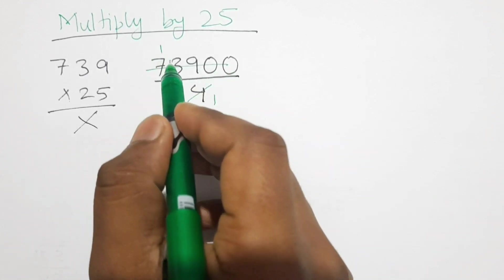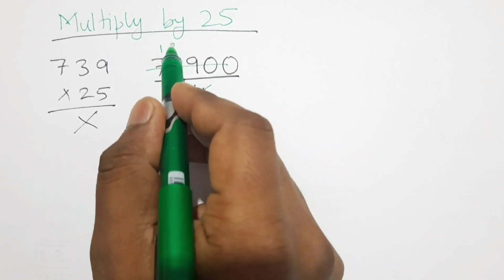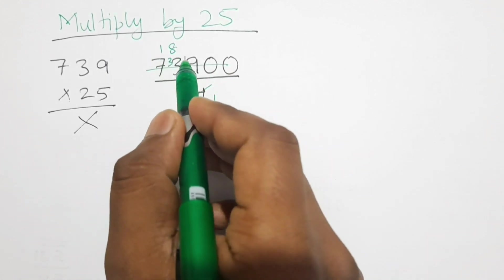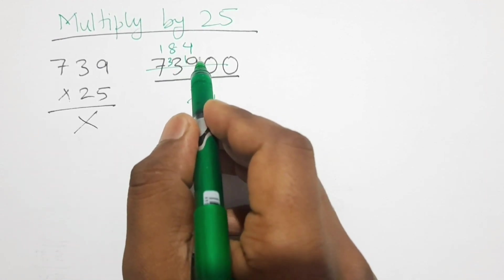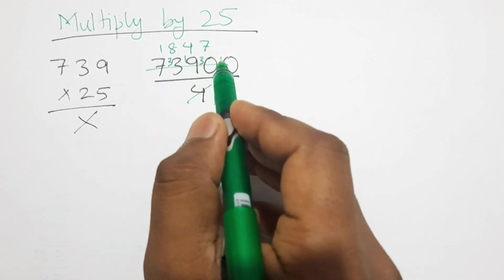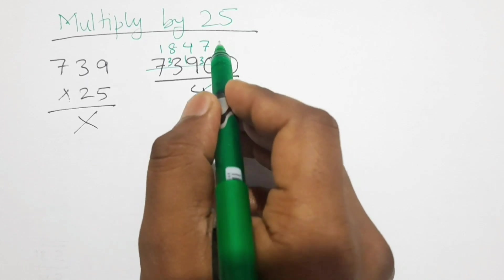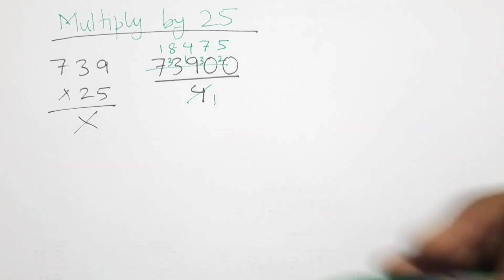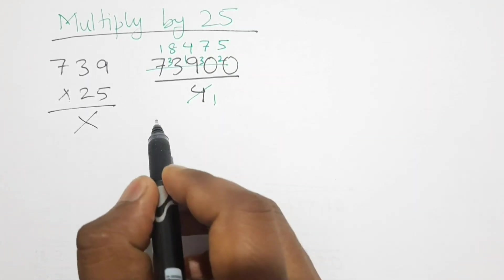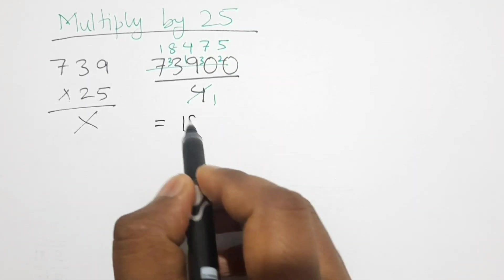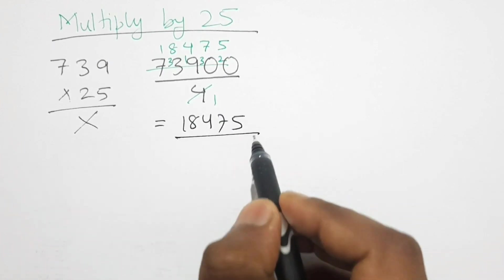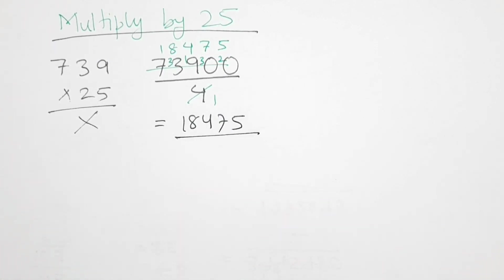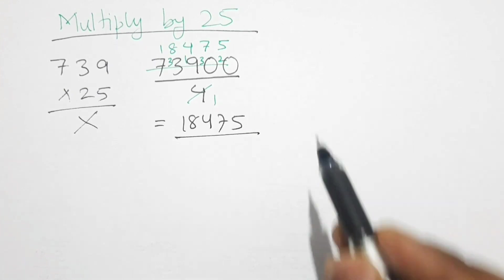Dividing 73900 by 4: 4×1 is 4, 3 left; 4×8 is 32, 1 left; 4×4 is 16, 3 left; 4×7 is 28, 2 left; 4×5 is 20. So the product is 18475. This method is much faster than our usual method.